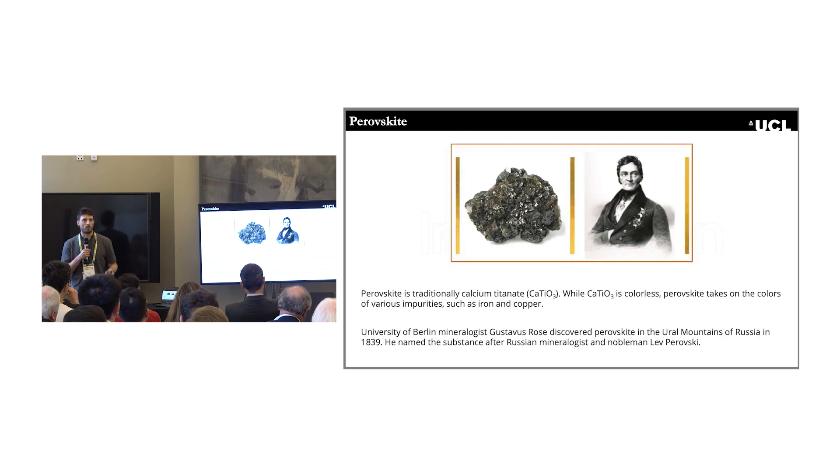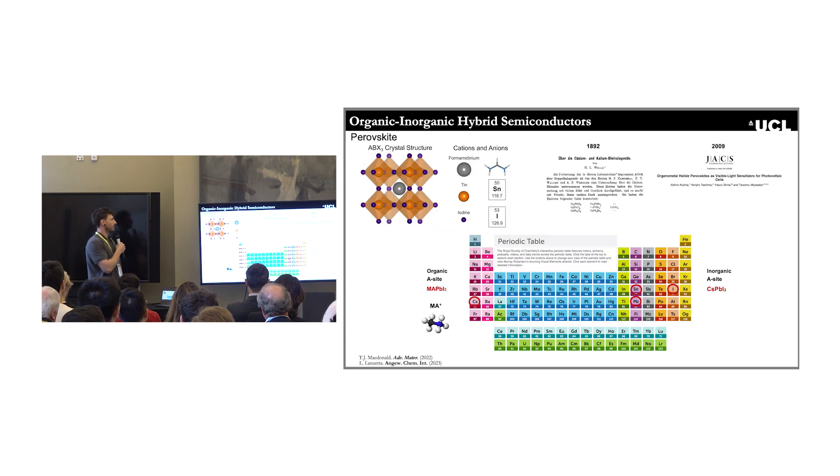I mentioned the word perovskite. What is perovskite? Traditionally, it's calcium titanate, a mineral we can find in the ground, but in this form it's actually not a semiconductor. The ones that work quite well as semiconductors are those based on germanium, tin, or lead halides. Actually, the first report on these types of semiconductors was back in 1892, so it's not a new material discovery. They've been around for a very long time.